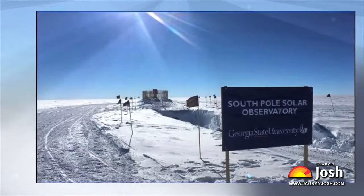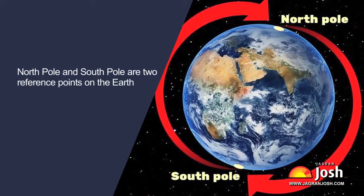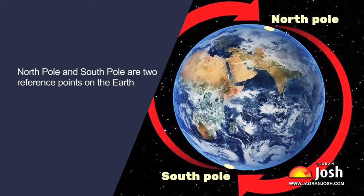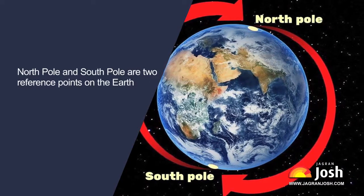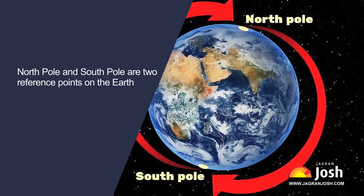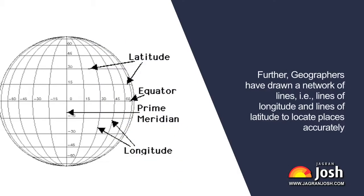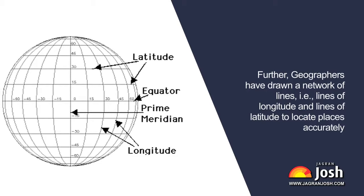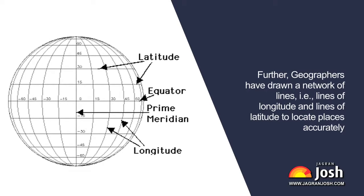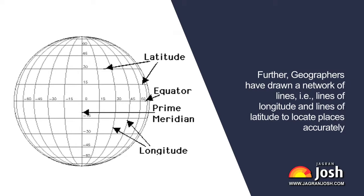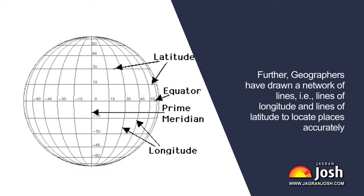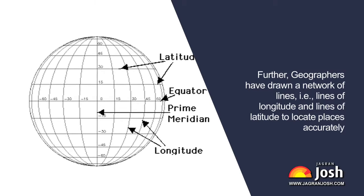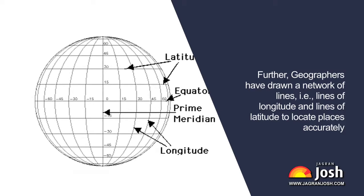Before we get to that, let's understand a few basics. How are places located on the earth? The North Pole and South Pole are two reference points on the earth, and with these two points, a line is drawn which lies exactly midway between the poles, known as the equator. Geographers have drawn a network of lines — lines of longitude and lines of latitude — to locate places accurately. These lines intersect each other at right angles and create a network known as a grid or graticule, which helps us accurately locate places on the surface of the earth.